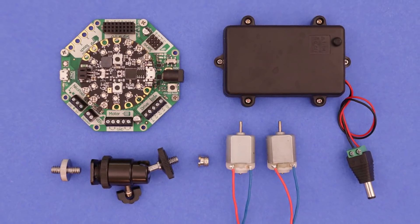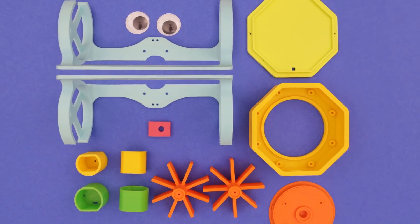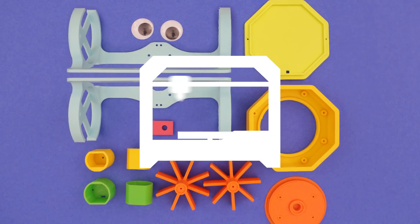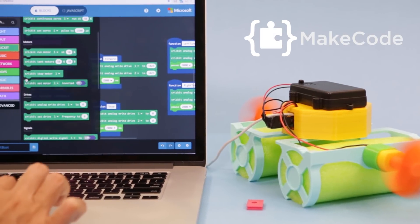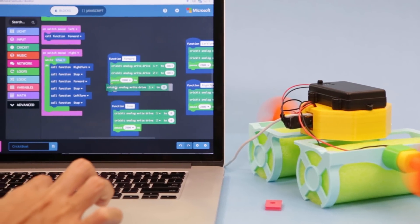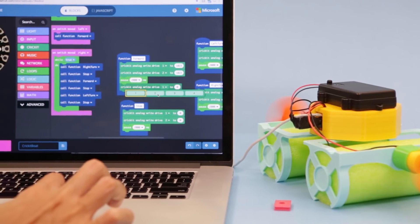You can get a full list of parts used to build this project linked in the description of this video. Use Adafruit's MakeCode to program your waterbot to maneuver around obstacles. Use the onboard sensors to make it interactive.